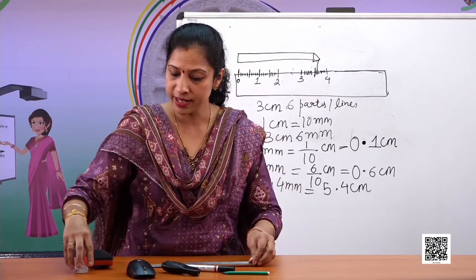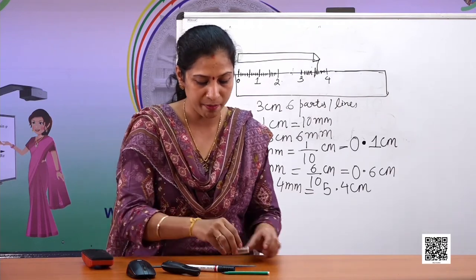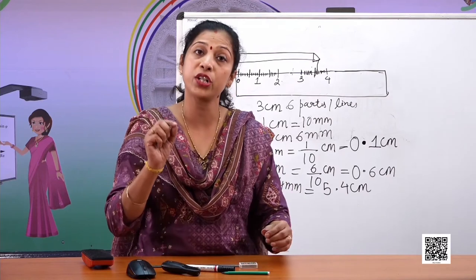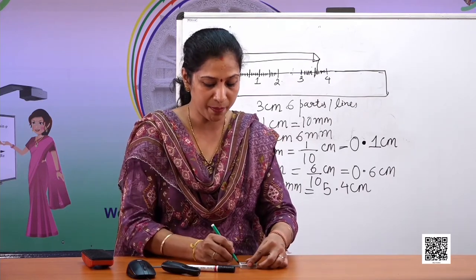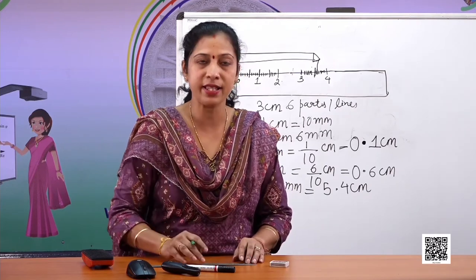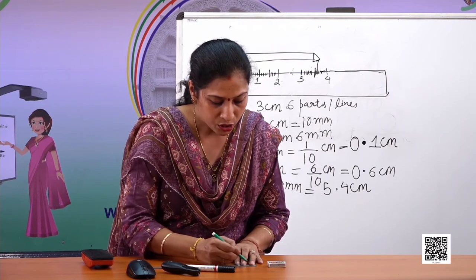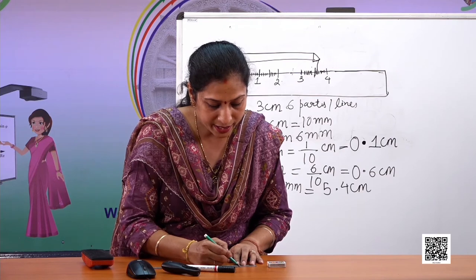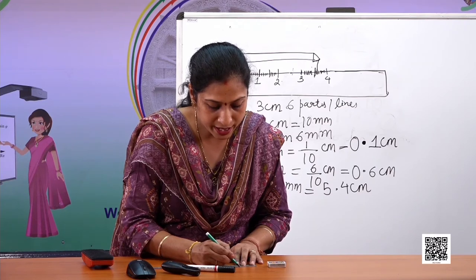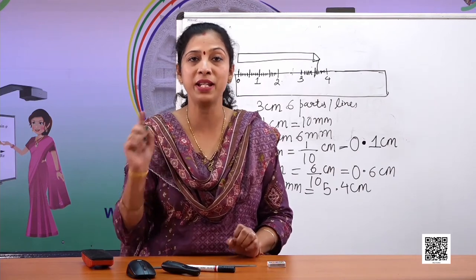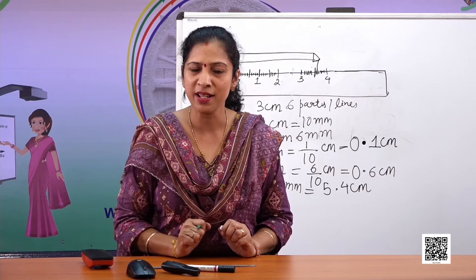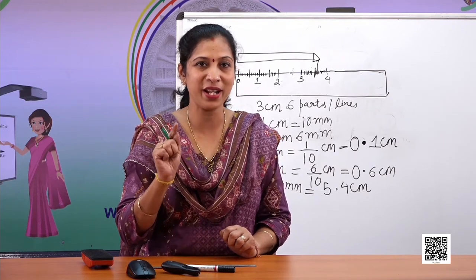I'll show you one more example with this scale — measuring a small matchbox. You can keep it like this and take markings on your paper. Measuring from zero: one, two, three, four centimeters, and between four and five there are one, two, three, four, five, six, seven small lines — seven millimeters. So the length of the matchbox is four centimeters and seven millimeters, which is 4.7 centimeters.